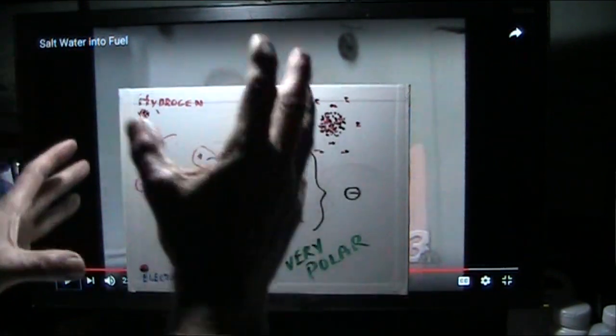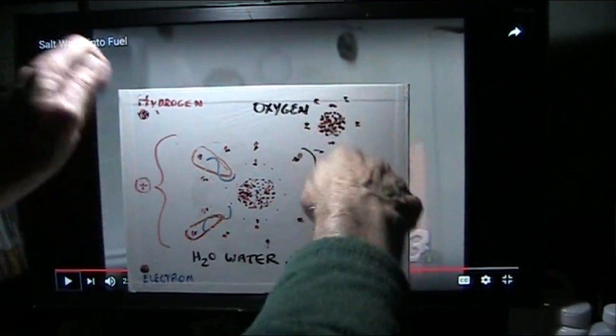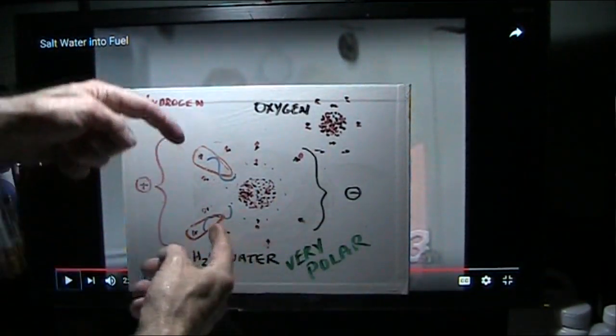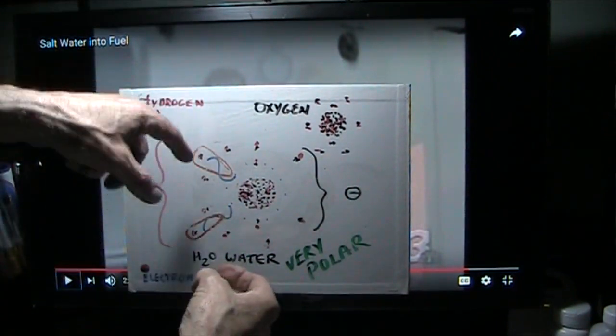Now here is what water is made of, and he is shaking this water so unbelievably because this is a pole, it's a positive and negative just like a little bar magnet in there, and he's making them until he shakes these hydrogens, the electrons right out of them.